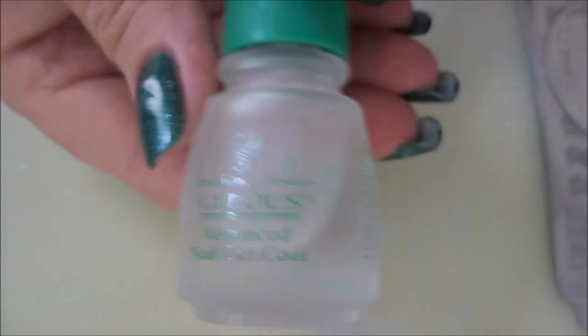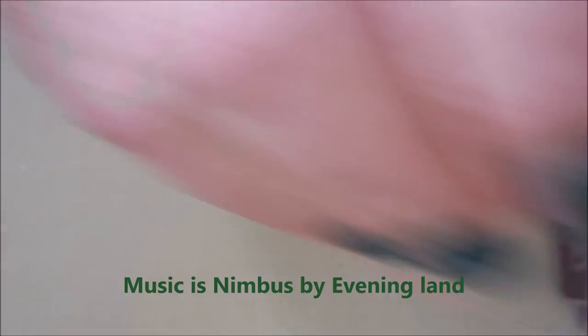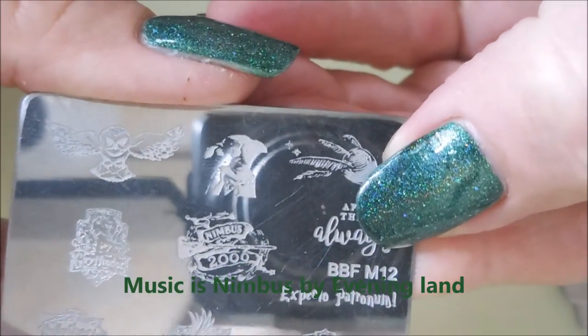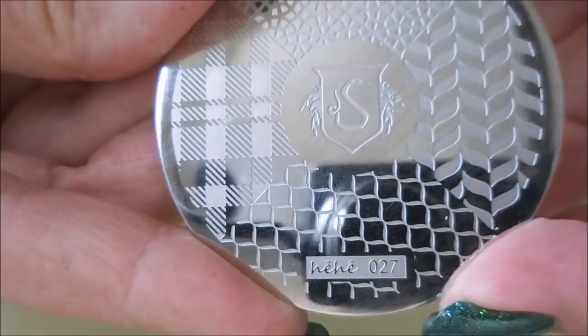And I've topped it off with a coat of Posh and then a coat of Jellish and then another coat of Posh. And then I'm going to be using a bunch of plates today. I'm going to be using this BBF M12 and this HeHe 027.